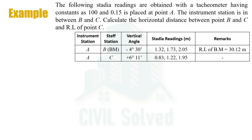In order to solve any kind of example related to surveying, it's always advisable to draw the sketch first. So let's say this is point A — as it is given that the instrument is placed at point A, and it is also given that the instrument station is in between point B and point C.